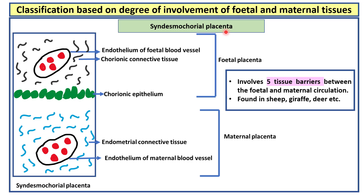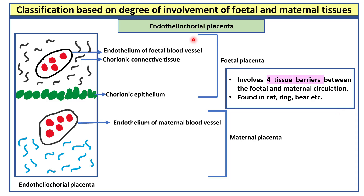Syndesmochorial placenta involves five tissue barriers between the fetal and maternal circulation. In this case, the uterine epithelium is lost. This is found in sheep, giraffe, deer, etc. Endotheliochorial placenta involves four tissue barriers. In this case, the uterine epithelium and endometrial connective tissue are both lost. This is found in cat, dog, bear, etc.